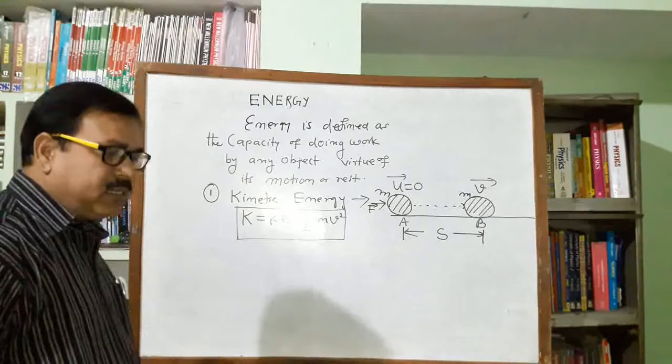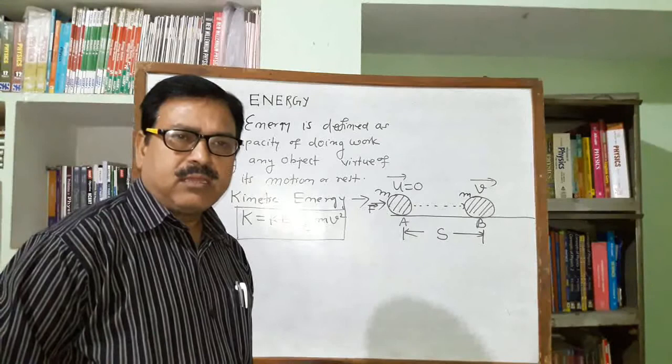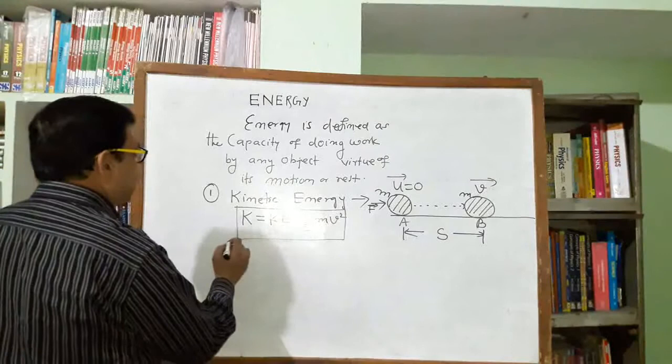The energy possessed by any object by virtue of its motion is called kinetic energy. When any object is in motion, the capacity to do work is called kinetic energy.